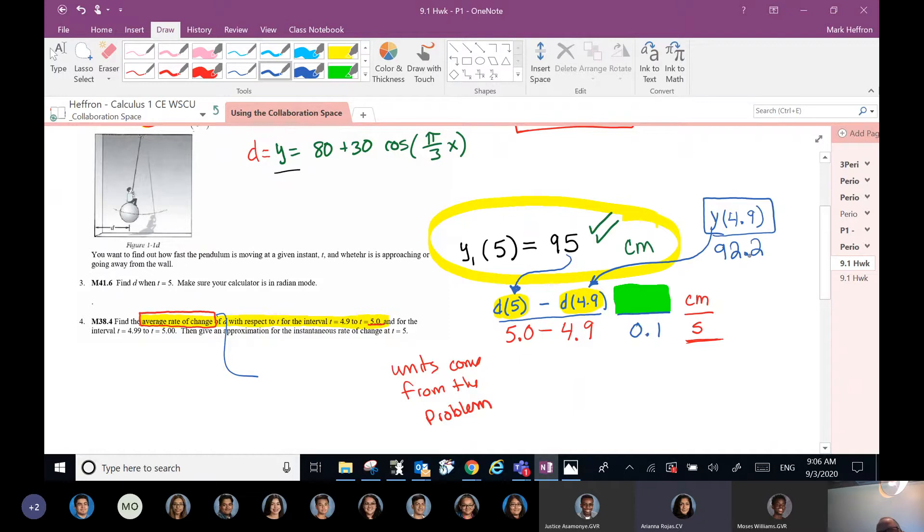Can you hear me? I can. So you're saying we've got 95 minus 92.2 all over 5 minus 4.9. Maybe somebody should check Ariana to make sure her 92.2 is right. But if it is, it's 92.5, not 5.2. Okay. So that would mean 95 minus 92.2 might be 2.8 centimeters. 5 minus 4.9 is 0.1 seconds.